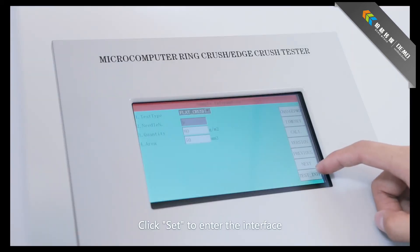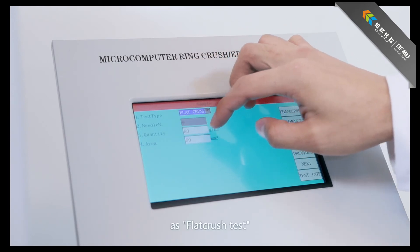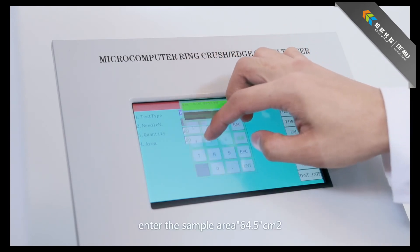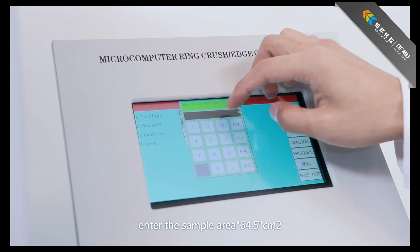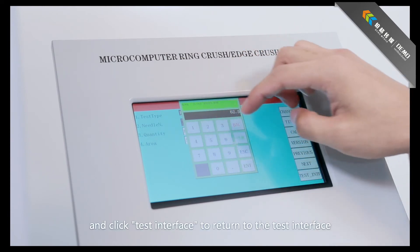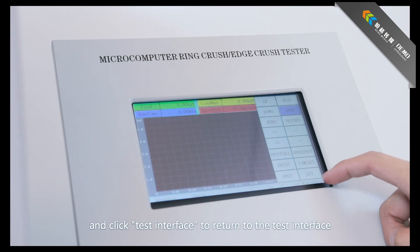Click Set to enter the interface to select the test type as Flat Crush Test. Enter the sample area, 64.5 square centimeters, and click Test Interface to return to the test interface.